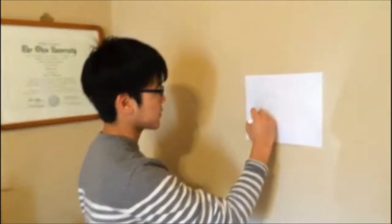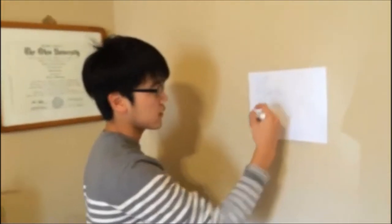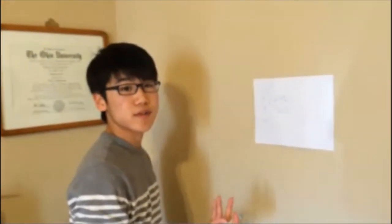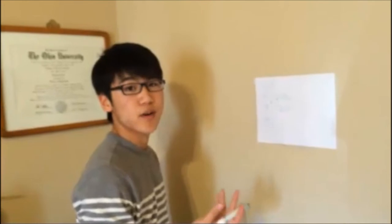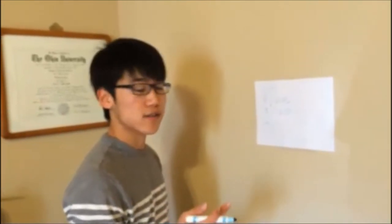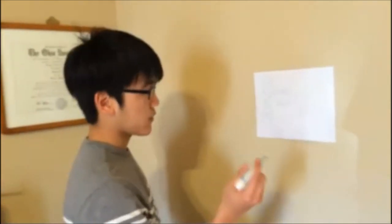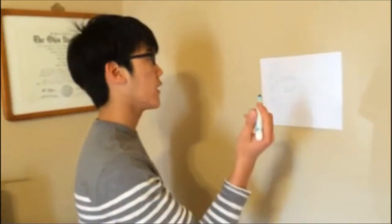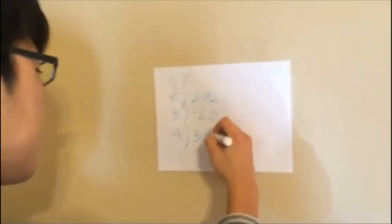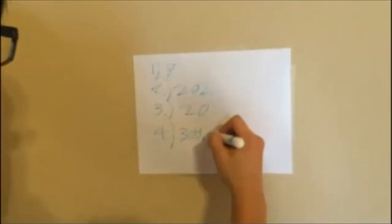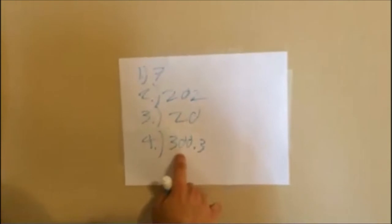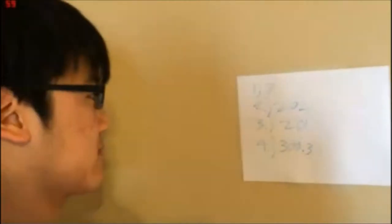The last rule, number four, states that all numbers which are simultaneously to the right of the decimal point and at the end of the number are significant figures. For example, 300.3 has four sig figs: one, two, three, four.